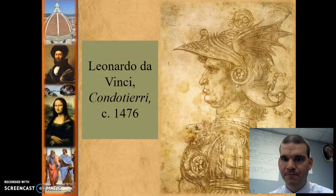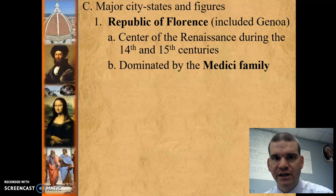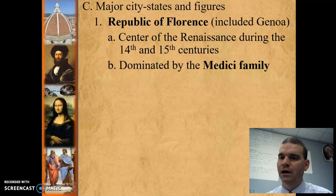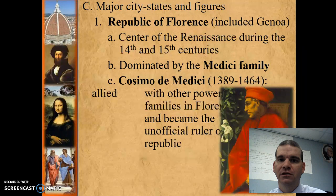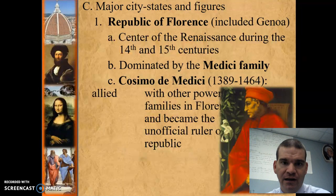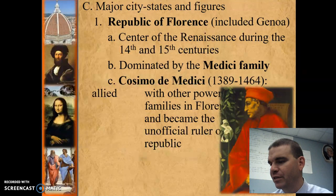Here's Leonardo da Vinci's sketch of Condottieri. Now let's go over some of the major people in each area. When you think Florence, you've got to know the Medici family. Because they made so much money through the banking industry, when you have that kind of money, you're going to dominate all aspects of life, especially political power. Cosimo, the father of this family, is going to ally with other powerful families in Florence and become the unofficial ruler of the republic.